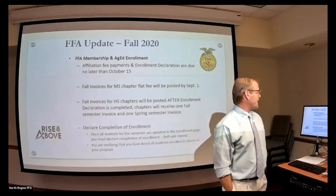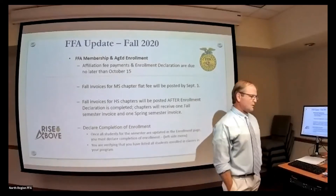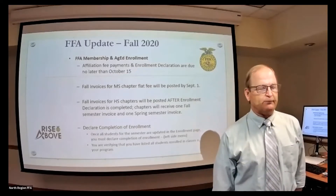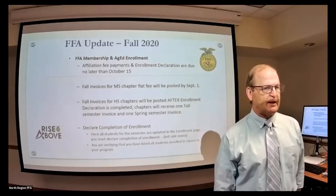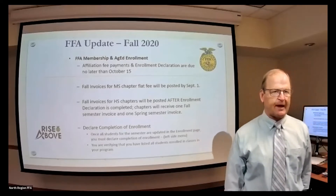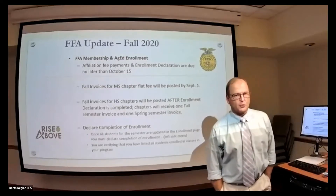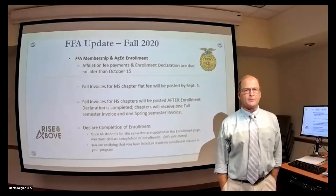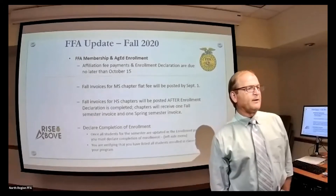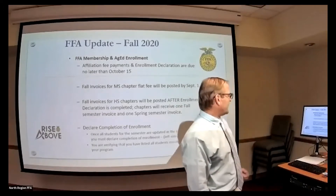The fall invoices for the high school chapters will be posted after your enrollment declaration is completed. The sooner you get your enrollment done and hit that declaration button, the sooner they'll get your invoice posted, which will give you more time to get the check cut by your school bookkeeper. So the earlier you get in and do that enrollment and hit declare, they'll get your dues posted for that semester.